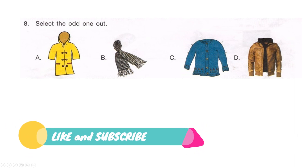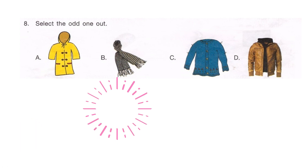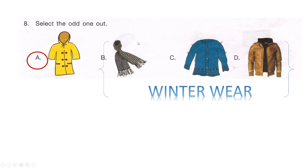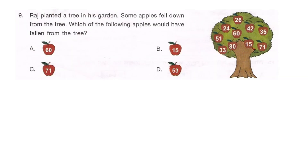Next question: select the odd one out from options A, B, C, or D. This is an easy one. The answer is option A, the raincoat, because the other three — the muffler, sweater, and jacket — are winter wear, whereas the raincoat is rainy-season wear.